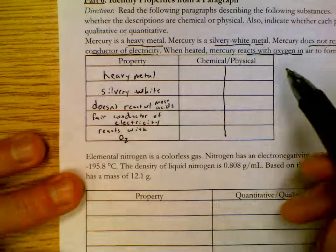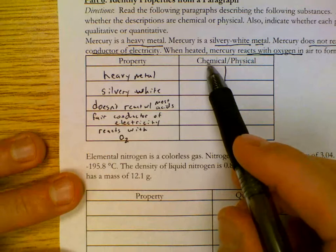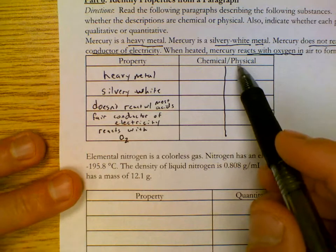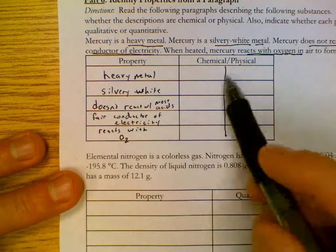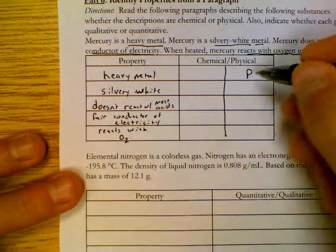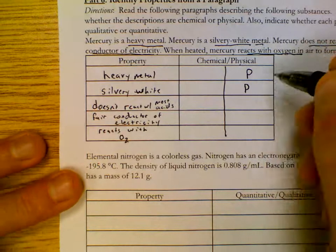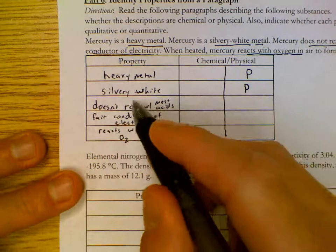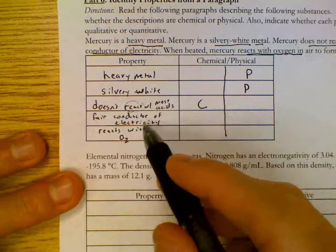Now we're deciding if we have physical or chemical properties. Chemicals describe how a substance can or cannot react. Physical is something that's easily sensed with the five senses. Heavy metal does not talk about reaction whatsoever. So that's physical. Silvery white, it's a color. Something I can see. Physical. It doesn't react. So here's that key word. It makes this chemical.